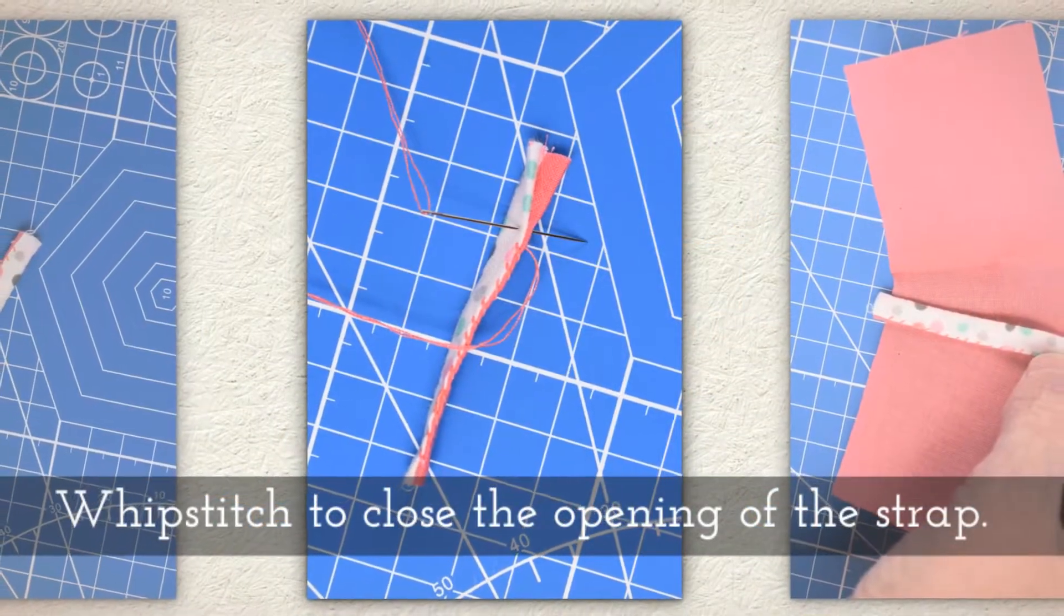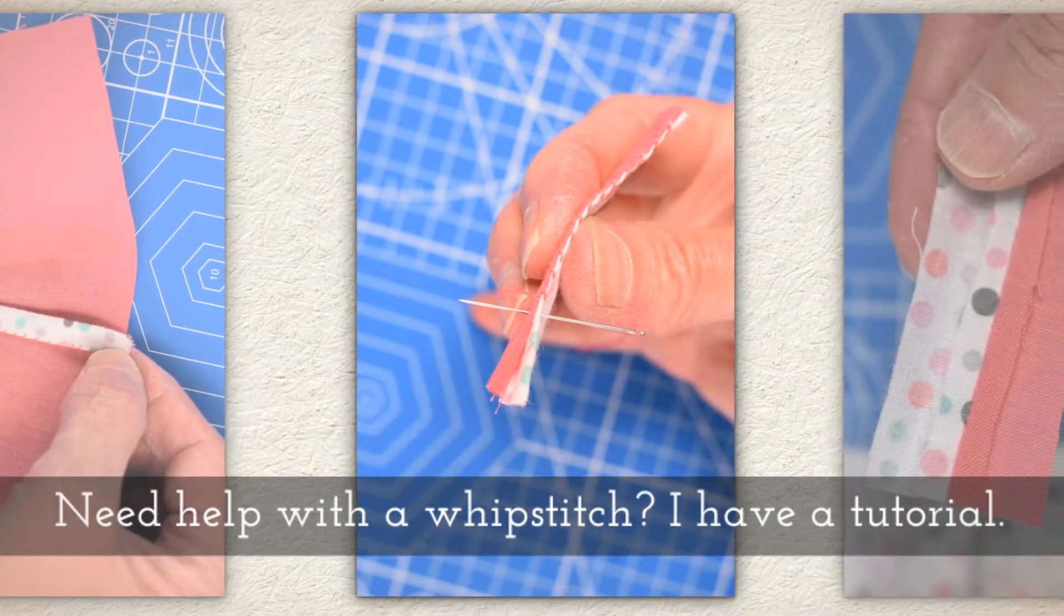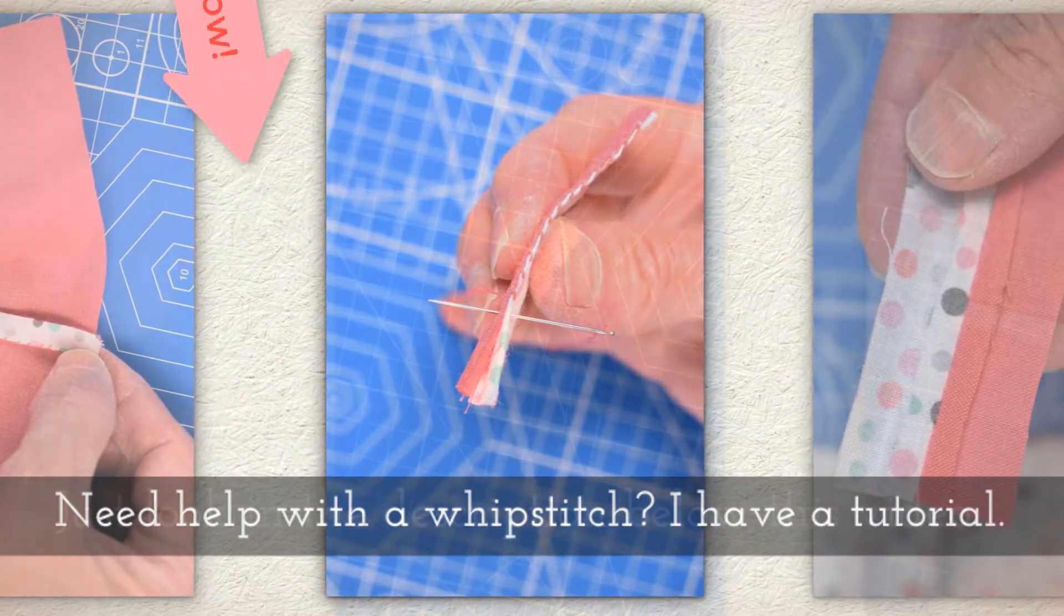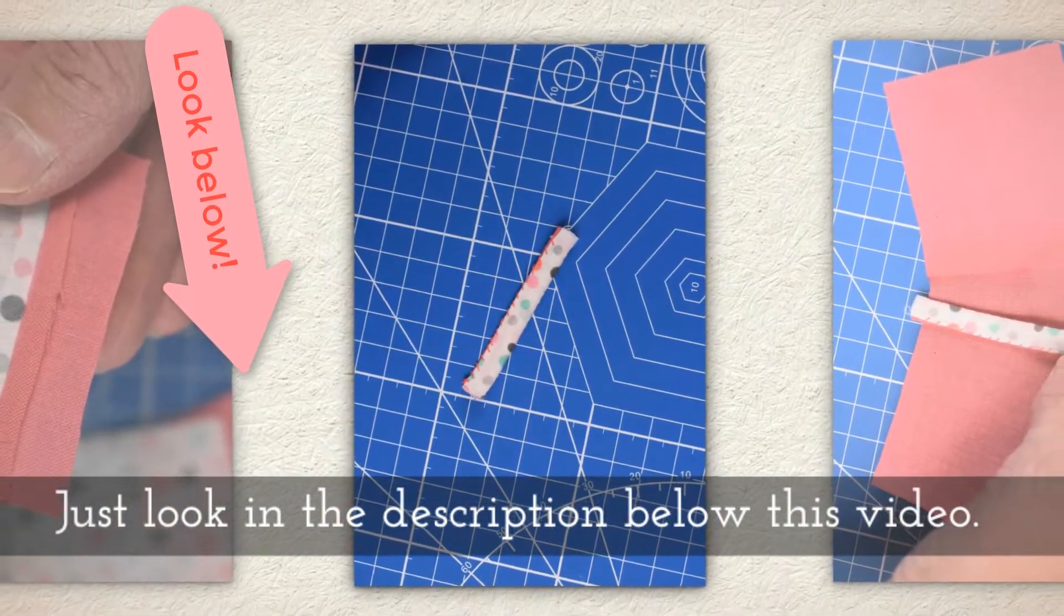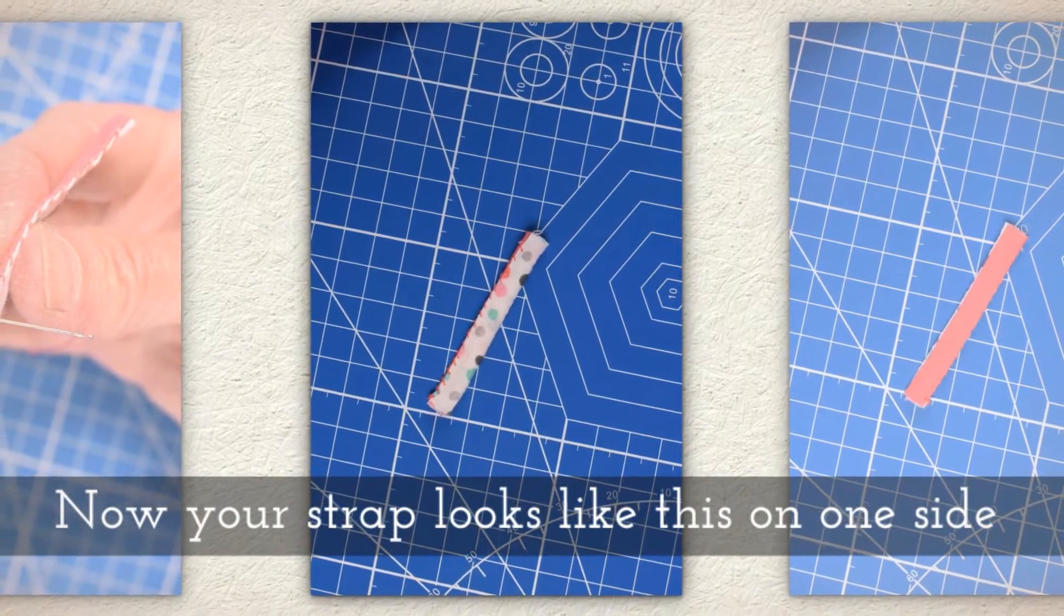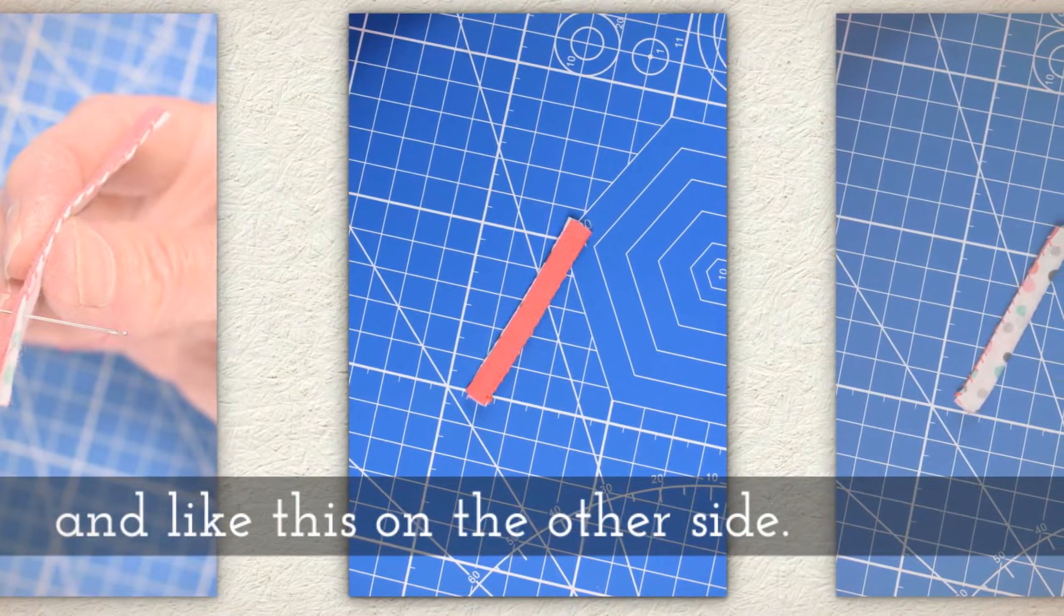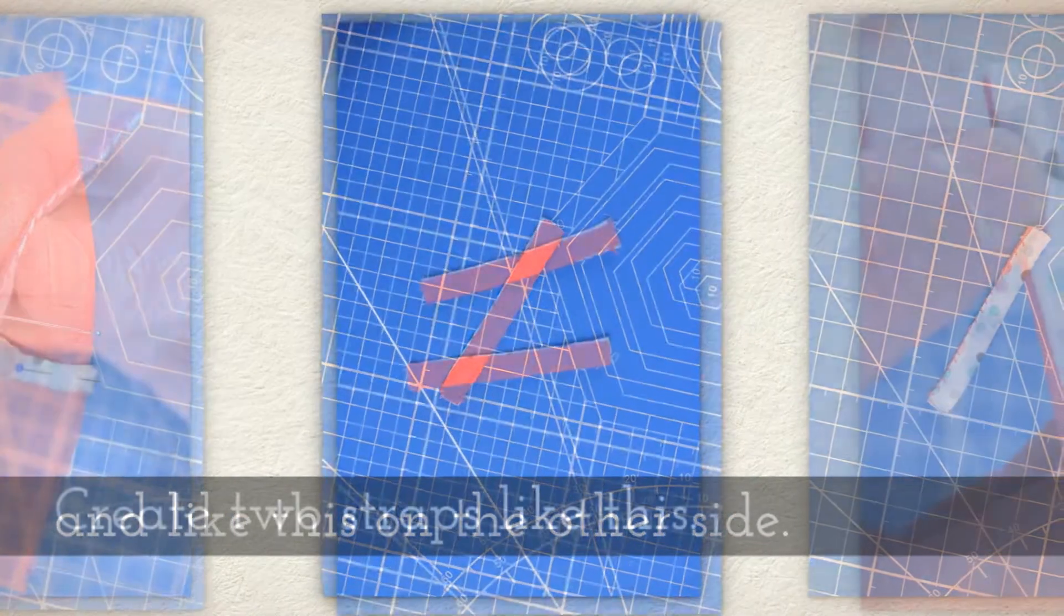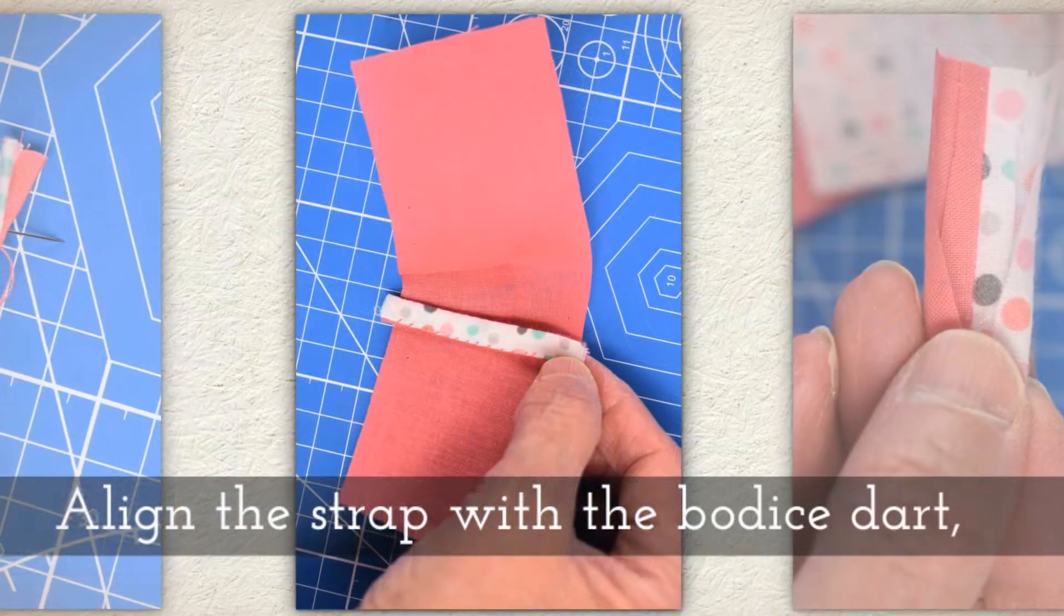Whip stitch to close the opening of the strap. If you need help with the whip stitch I have a tutorial for that. Just look in the description below this video on YouTube. Now your strap should look like this on one side and like this on the other side. You'll want to follow these directions to create two straps like this.